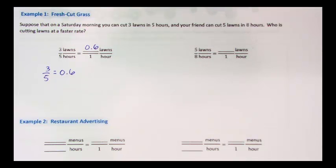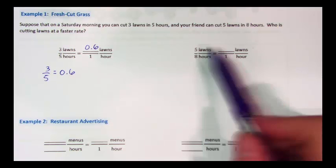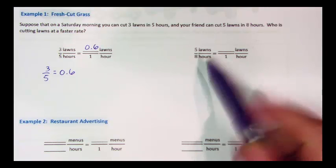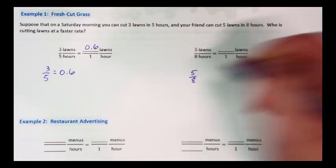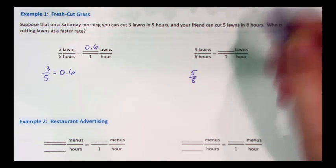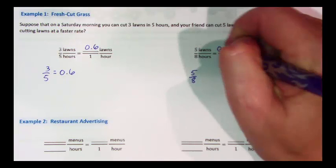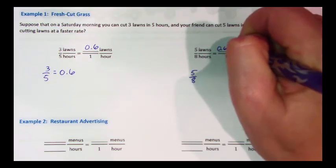If your friend can cut five lawns in eight hours, and we want to see if they're faster, we're going to take five and divide it by eight. Your friend is cutting five-eighths of a lawn per hour. If we write that as a decimal, that's going to be six-hundred-and-twenty-five thousandths.